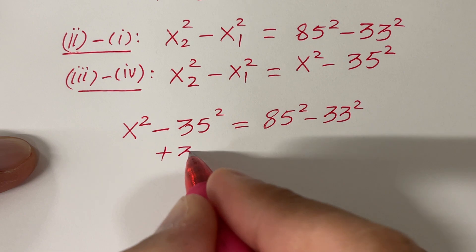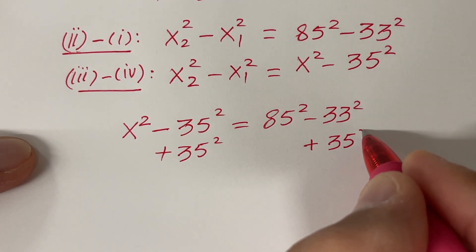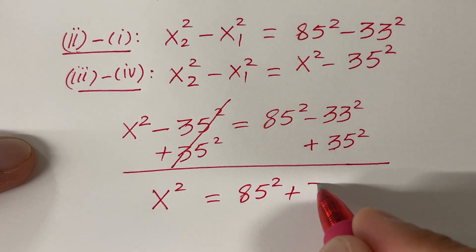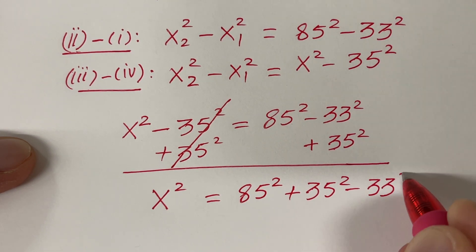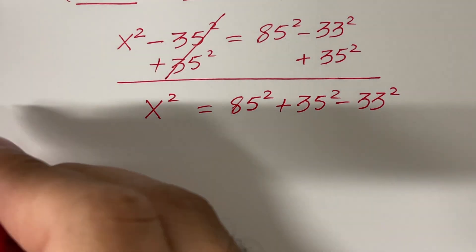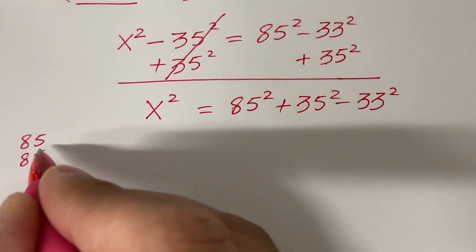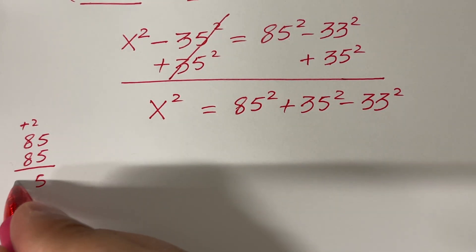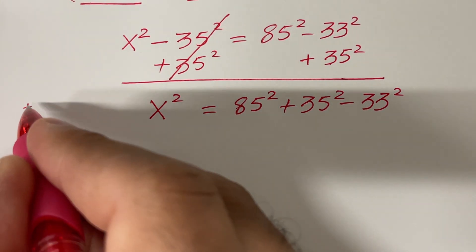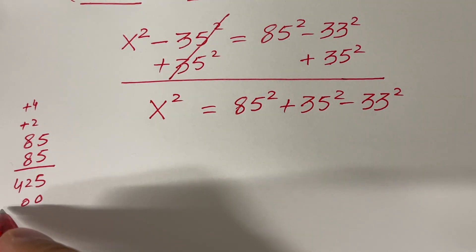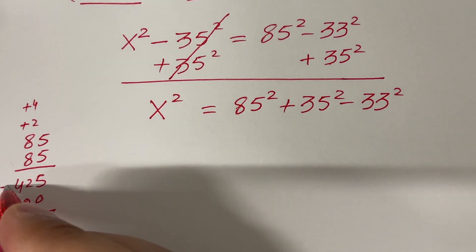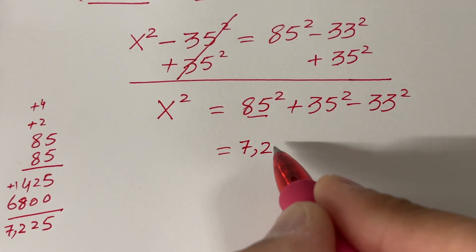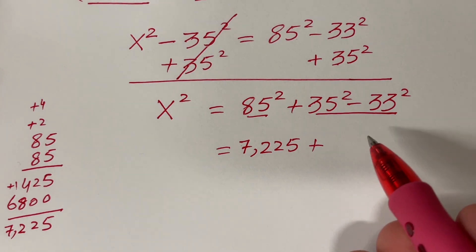We want to find x, so let's add 35² to both sides. This gives x² = 85² + 35² − 33². Now 85² = 7225. And using the difference-of-squares formula, 35² − 33² = (35 − 33)(35 + 33) = 2 × 68 = 136.